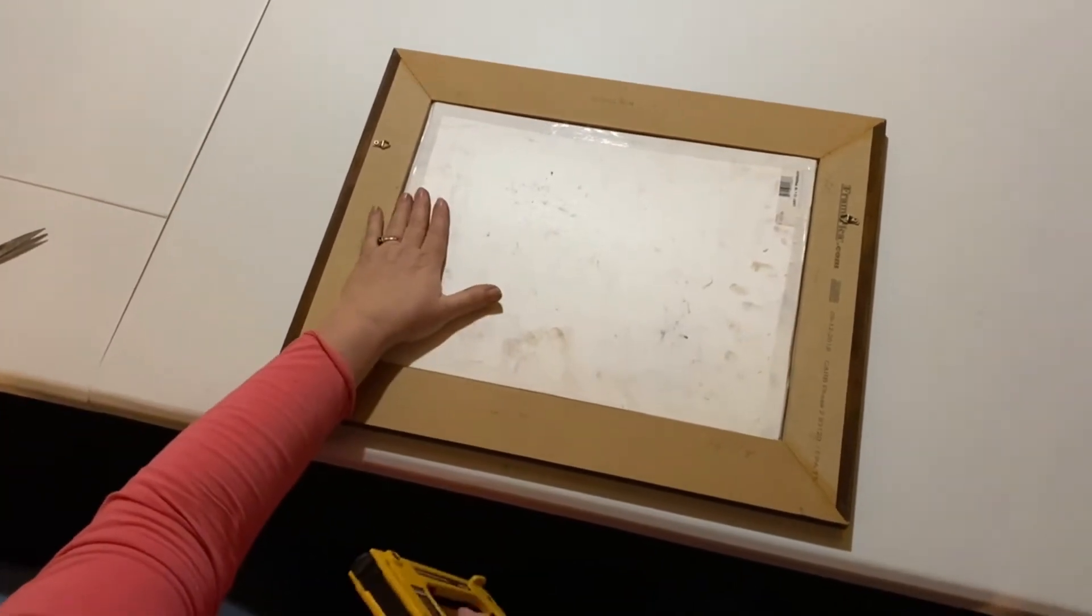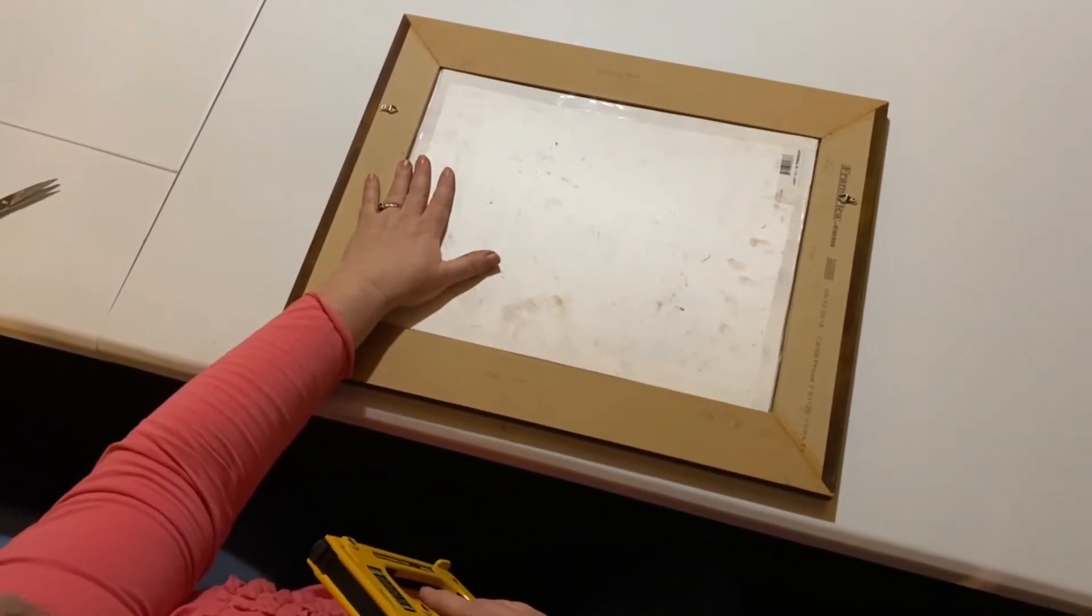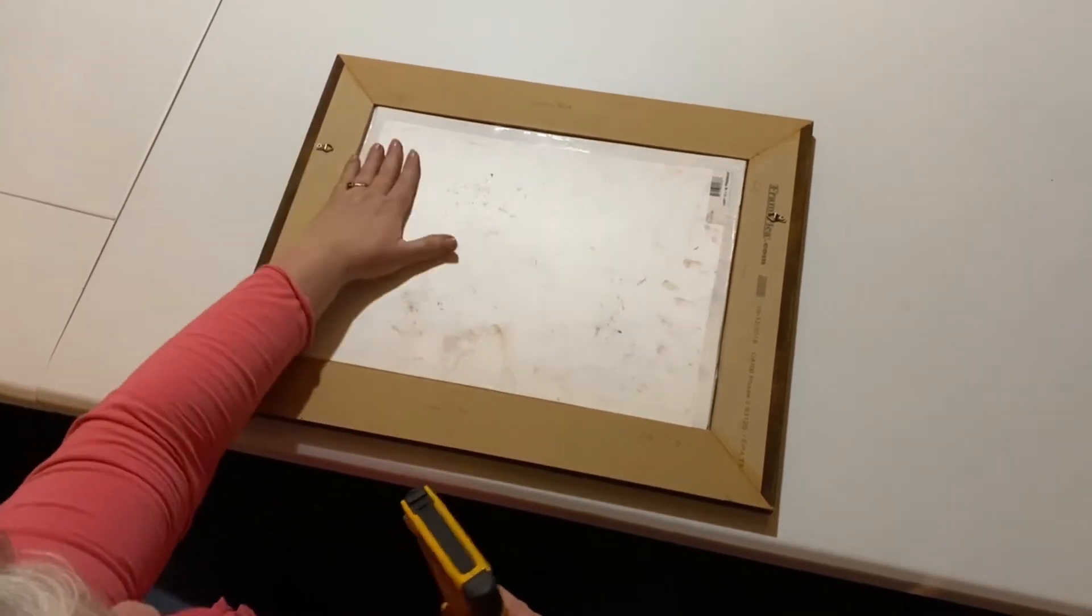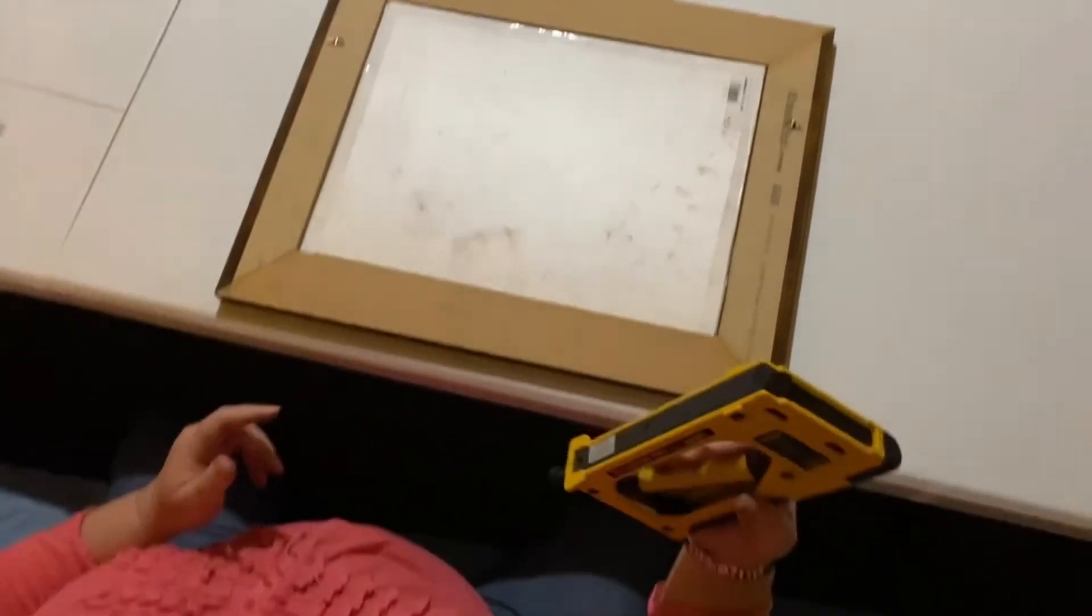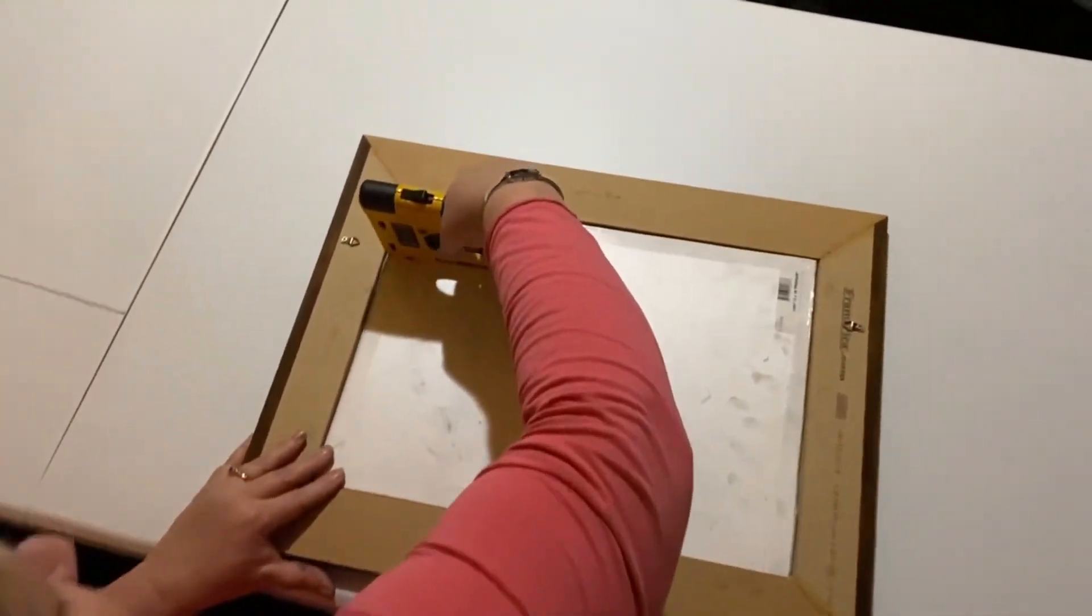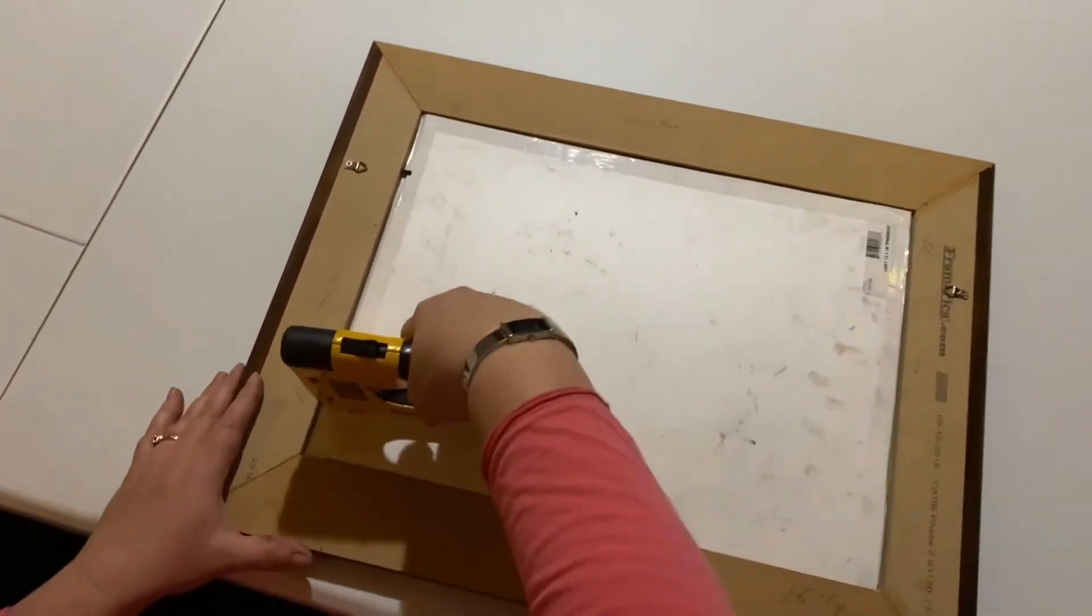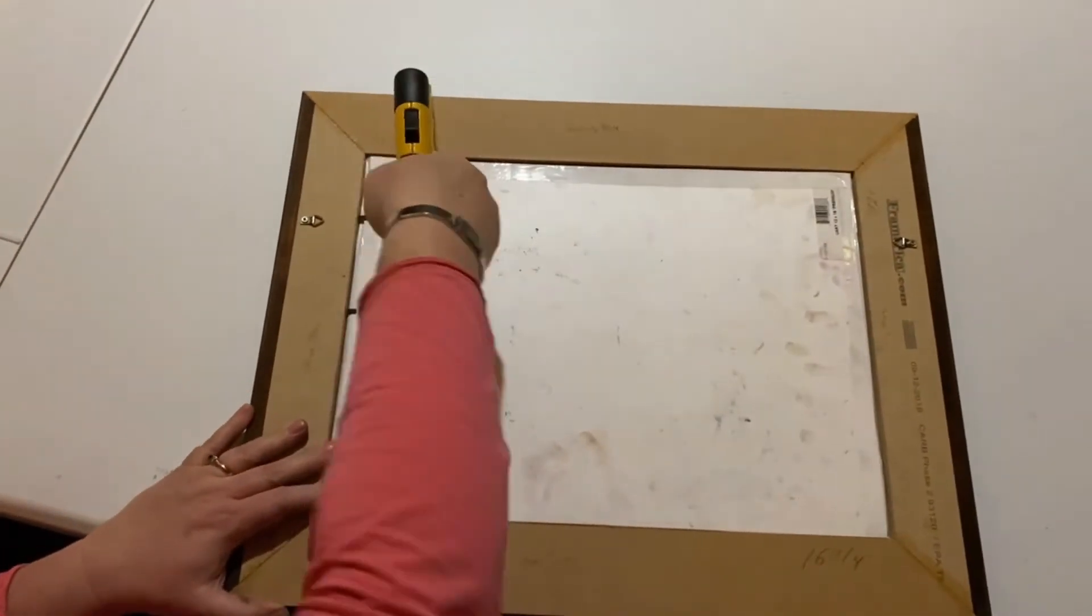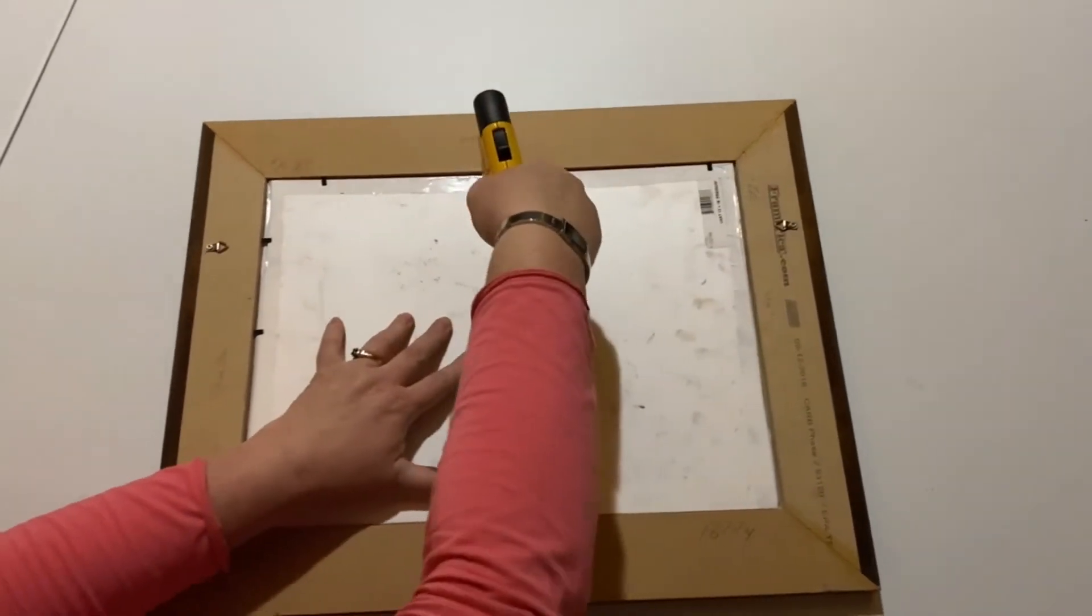If you ordered from webpictureframes.com, it's already going to have these little tabs that you can bend up and then put down. But I don't get the tabs when I order, so I'm using a point driver and just putting some points right along the perimeter.